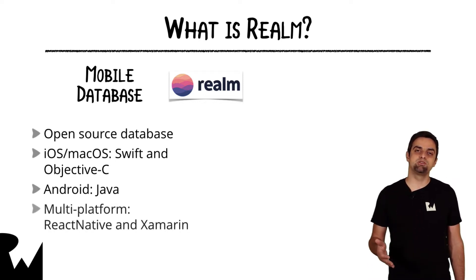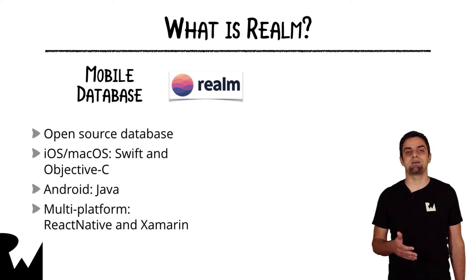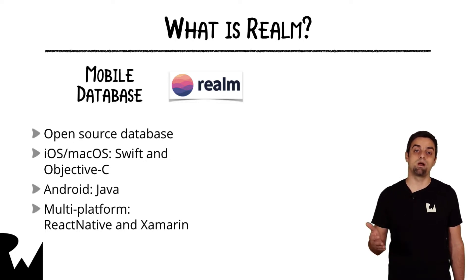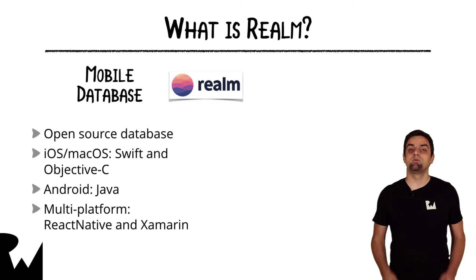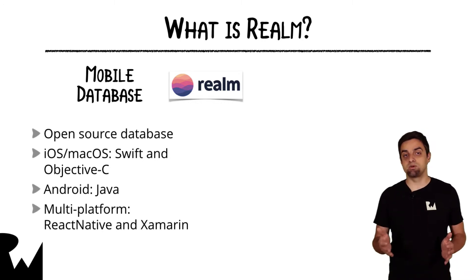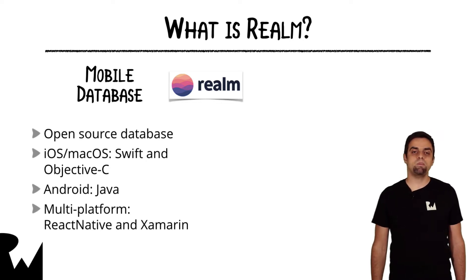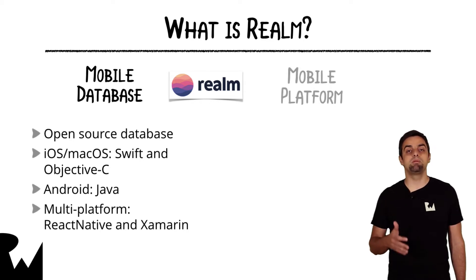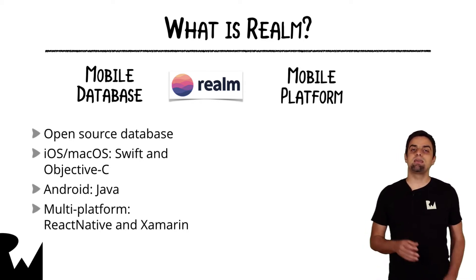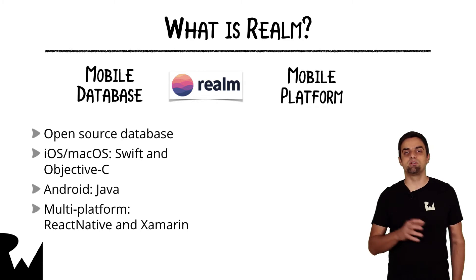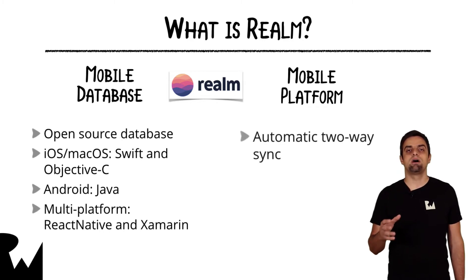For multi-platform solutions like Xamarin, developers have a C Sharp API they can use to work with Realm. And on React Native, Realm offers a JavaScript API that React Native developers can use in their own apps. The second product from Realm is the Realm Mobile Platform.